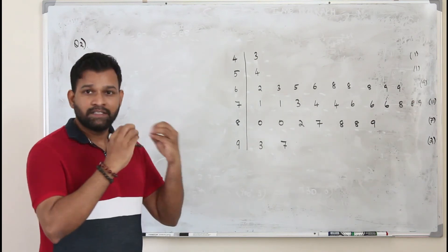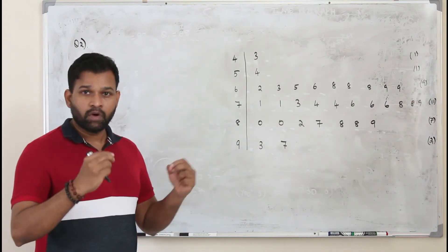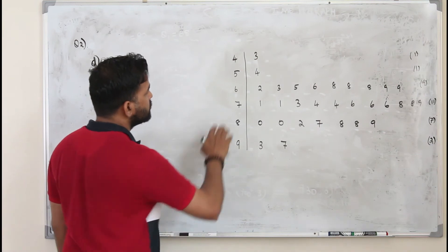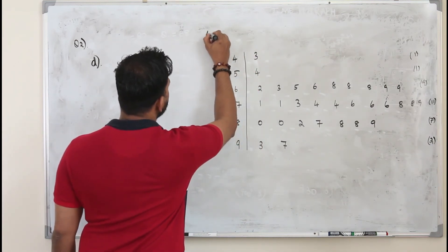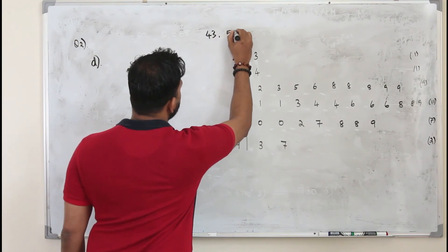So we need certain values if you want to draw the box and whisker plots. So I'm going to take the lowest value. Now this 43 is an outlier. And the lowest value is 54.